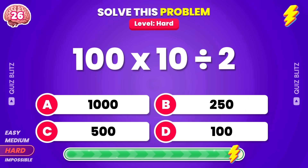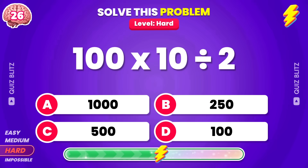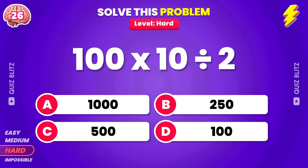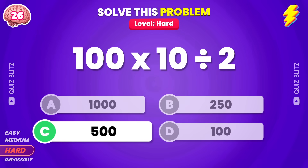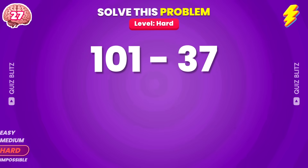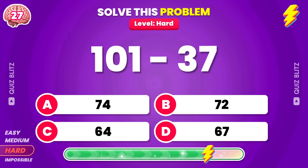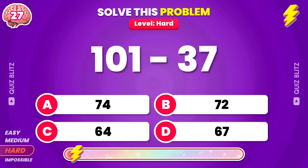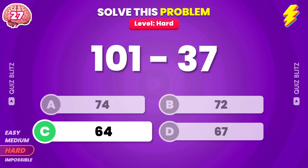What's the result of 100 times 10 divided by 2? The result is 500. 101 minus 37. The answer is 64.